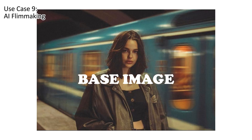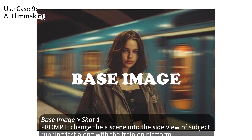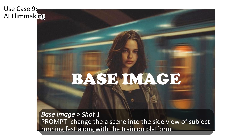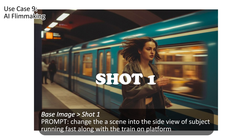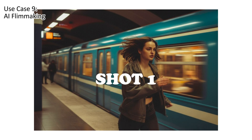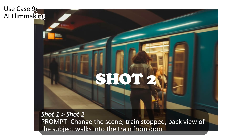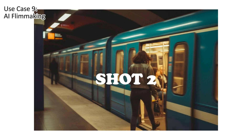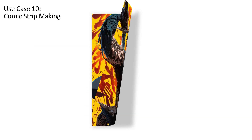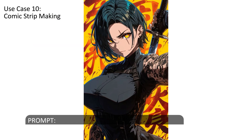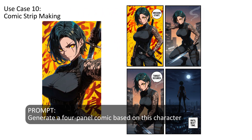Category 4: Continuous Shots. Nano Banana keeps characters and objects consistent across images, making it great for continuous storytelling. From a single base image, you can change the angle, the atmosphere, and expressions. You can even rebuild a whole scene — think of it like directing a sequence in a movie, or expanding one manga panel into a full comic strip.